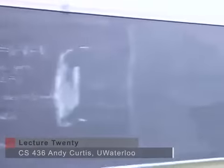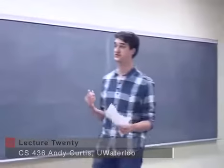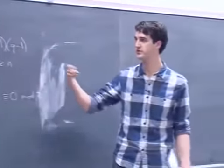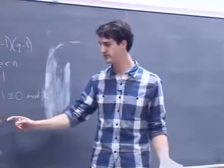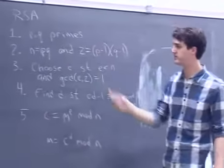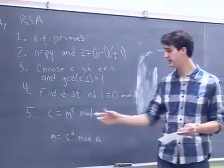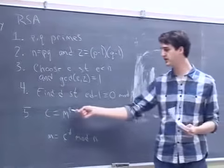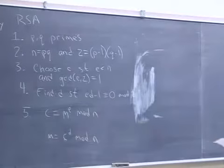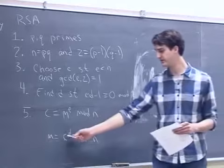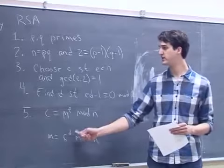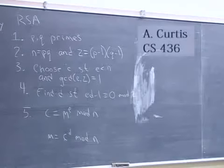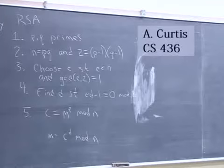Let's get started. Last time we finished up by going through the RSA algorithm for encryption. You set up all these variables, then you can encrypt your ciphertext by taking your message and raising it to your encryption key mod n. Likewise, you can decrypt it by raising the ciphertext to the decryption key.